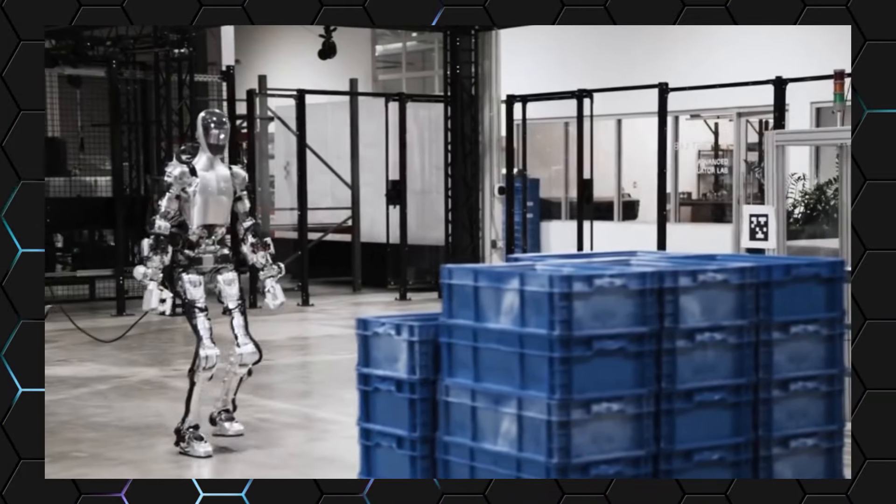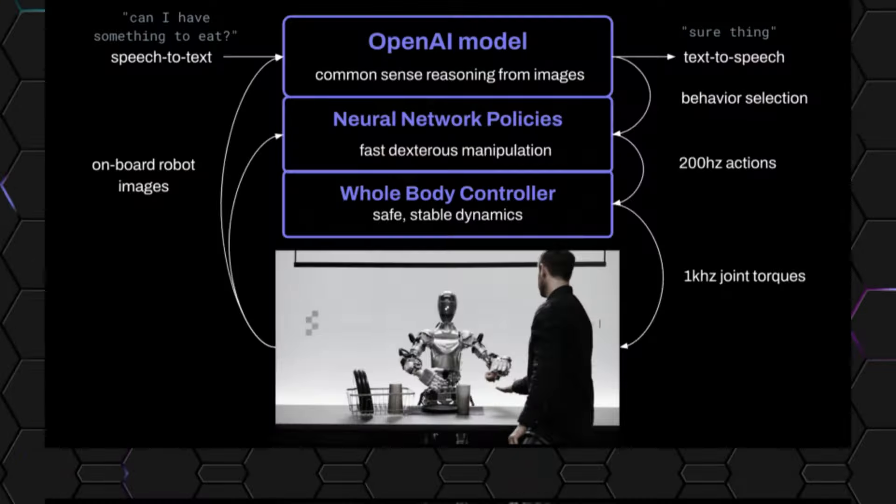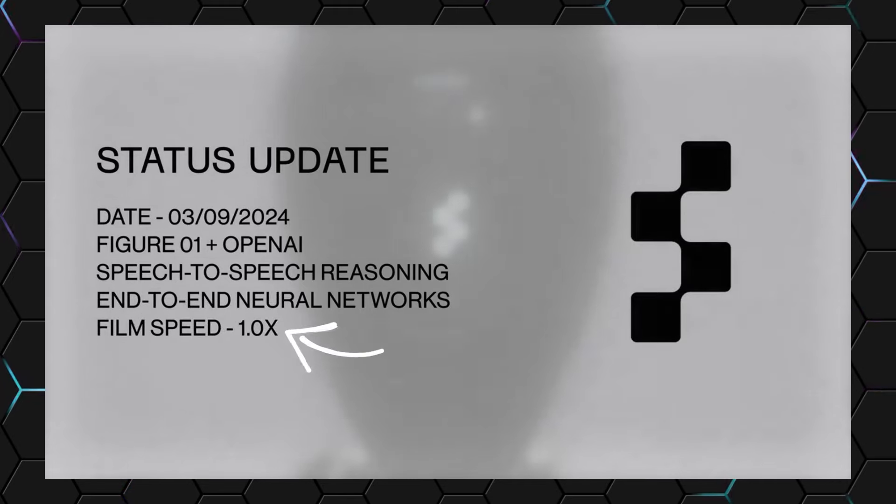One of the most noteworthy aspects of the Figure demo is that everything we witnessed was happening in real-time speed, without any acceleration or editing tricks. Typically, when you see a robot demo, the footage is often sped up because they don't want you to wait and see how slow the responses are. However, in this case, the video was not sped up at all.